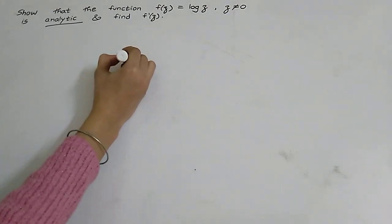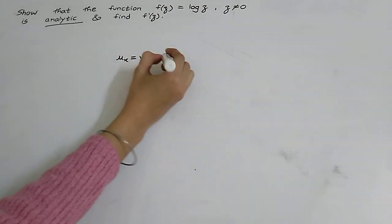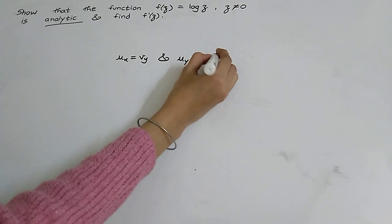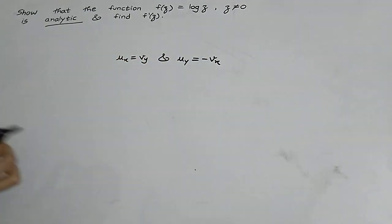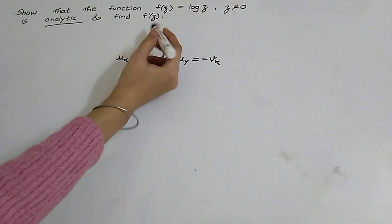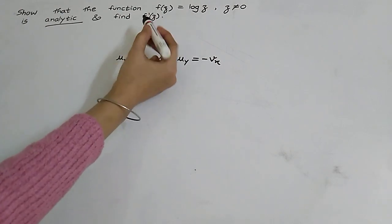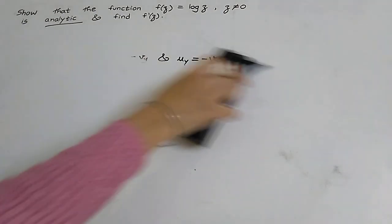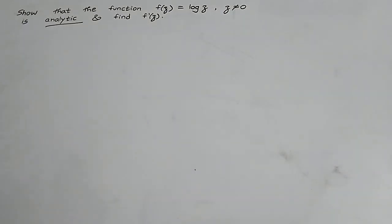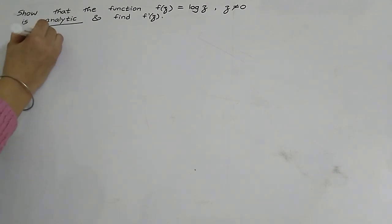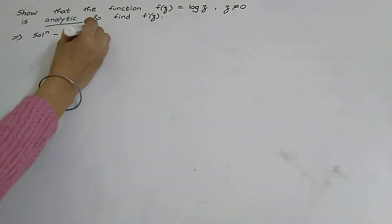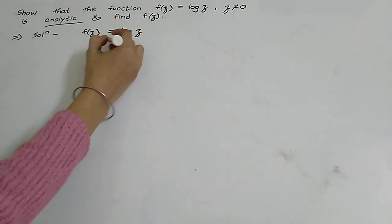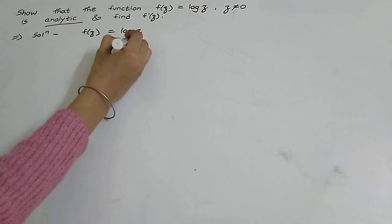The CR equations are: u_x = v_y and u_y = -v_x. Here u and v are the real and imaginary parts. So we have f(z) = log(z).